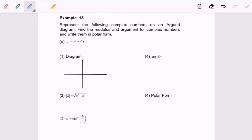Hello everyone, so now I'm going to discuss example 13. Represent the following complex number on an Argand diagram, then find the modulus, followed by the argument of the complex number, and then finally write the Cartesian form in a polar form.